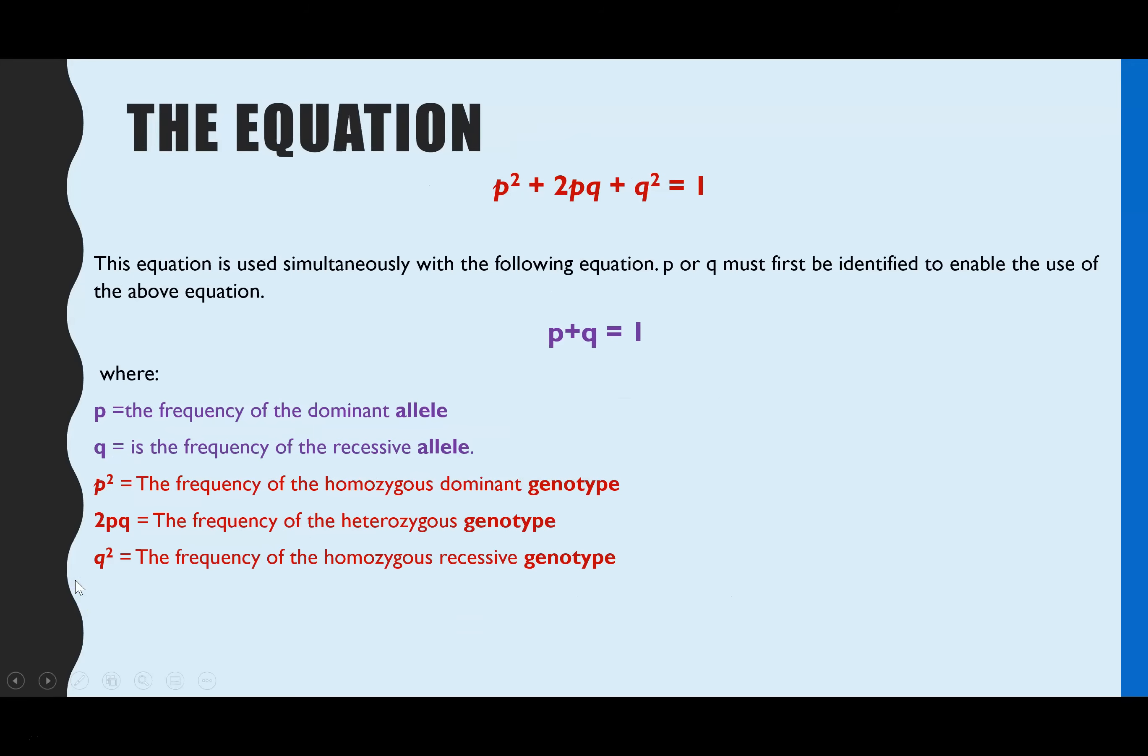The formula or the equation is actually two equations that are used simultaneously, and I've color coded them according to what they are representing. The top one, which is in red, represents the genotypes. There are three possible genotypes individuals could have for one gene. They could either be homozygous dominant, which is represented by P squared. They could be heterozygous, which is represented as 2PQ, or they could be homozygous recessive, which is Q squared.